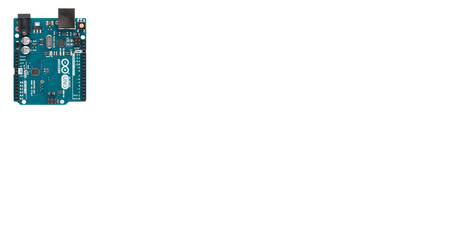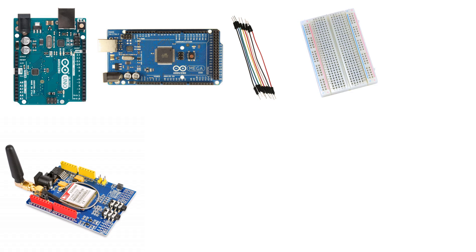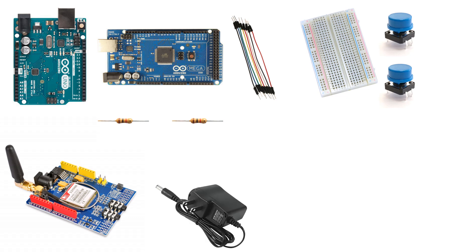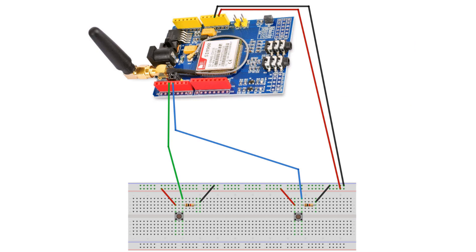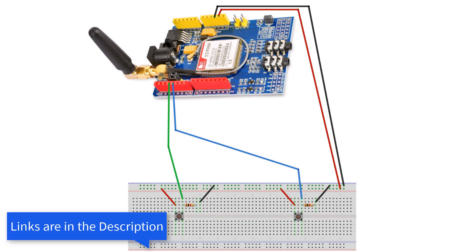For this project you'll need an Arduino Uno board or Arduino Mega, SIM 900 GSM Shield, jumper wires, breadboard, two buttons, two 1k ohm resistors, 5V power supply, Visuino program, and a SIM card. Wire everything according to this schematic.